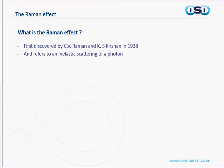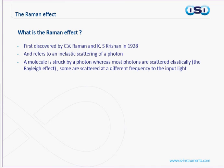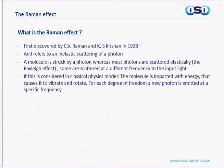It refers to the inelastic scattering of a photon. If a molecule is struck by a photon, whereas most photons are scattered elastically — known as the Rayleigh effect — with the same colour as the input light that struck them, some are scattered at a different frequency to the input light. In the classical physics model, the molecule is imparted with energy that causes it to vibrate or rotate, and for each degree of freedom of vibration, a new photon is emitted at a specific frequency.